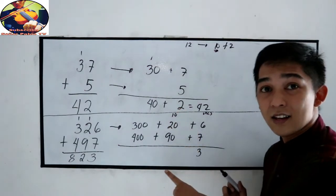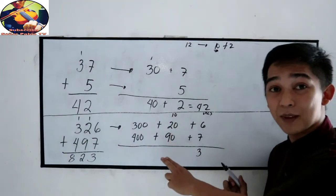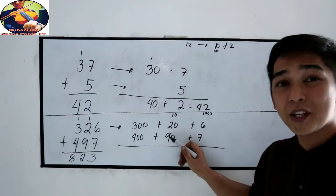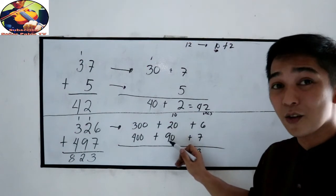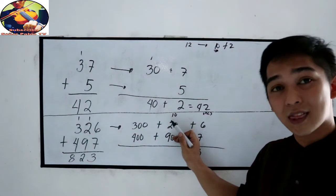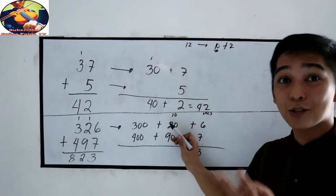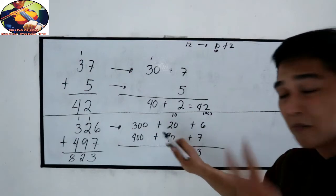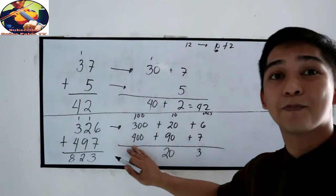This is the concept. Then, of course, we need to add those numbers in our 10's place. 2 plus 9, which is 20 plus 90, is 110. Plus the carried 10, that is 120. So in expanded form, that is 100 plus 20. Since we are in the 10's place, we write 20, then we need to add the 100 to our 100's place.